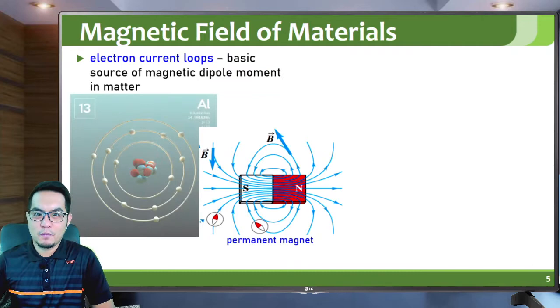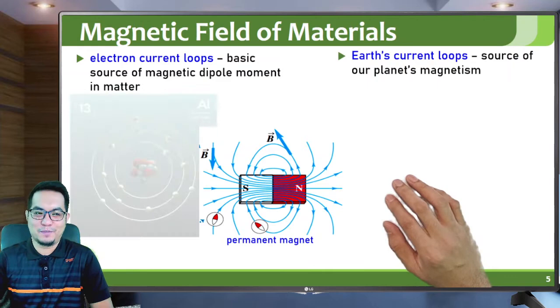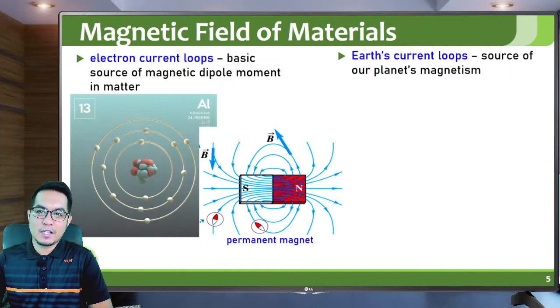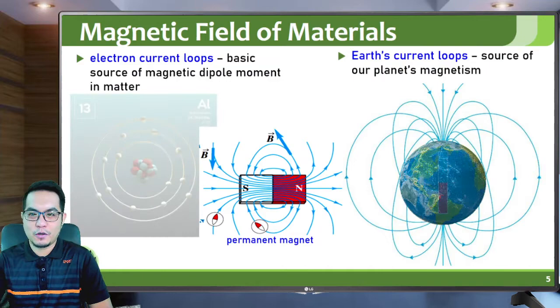With respect to the Earth, the core of the Earth contains ions of iron. These are charged particles, and since the Earth is rotating, these ions form current loops. This becomes the source of our planet's magnetic field — it is due to the current loops in the core, caused by the ions rotating with respect to the Earth's axis.